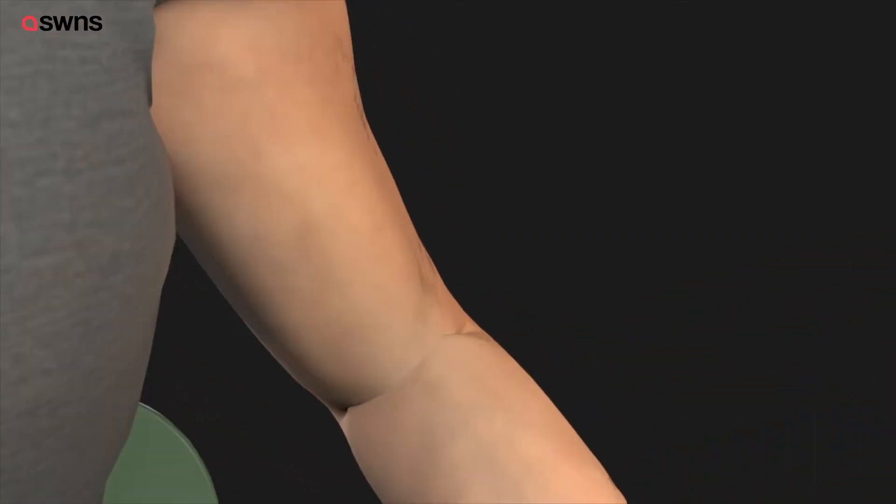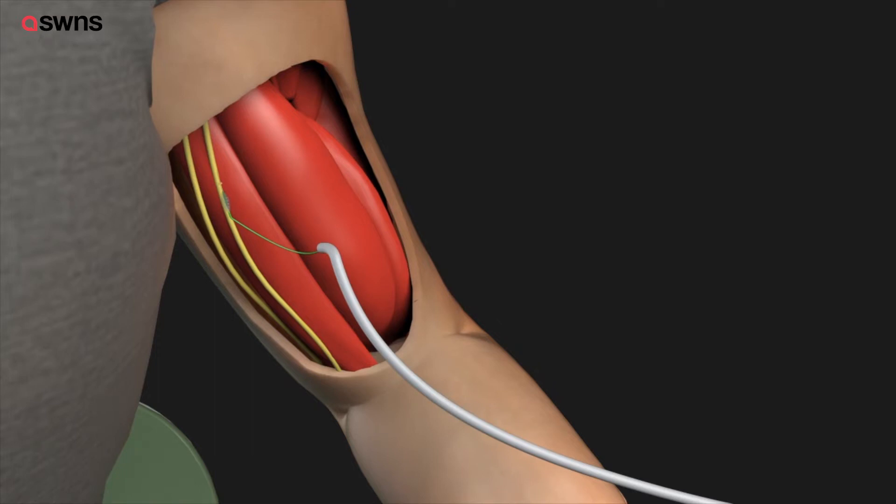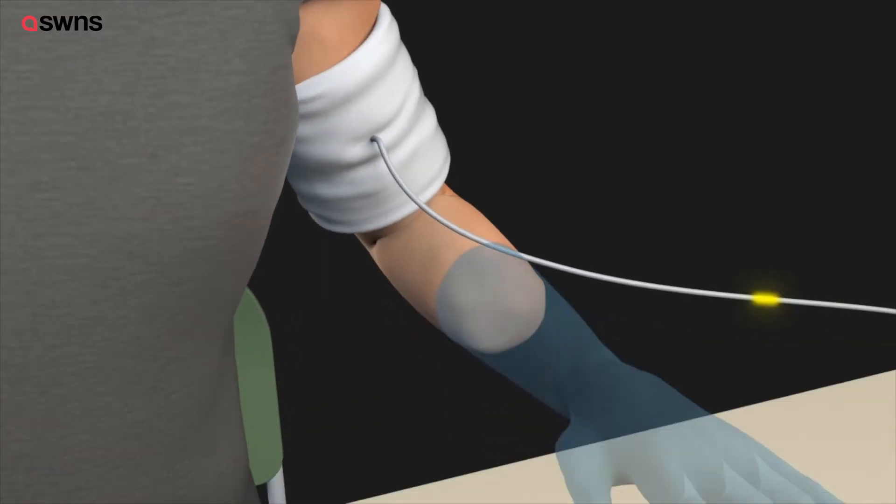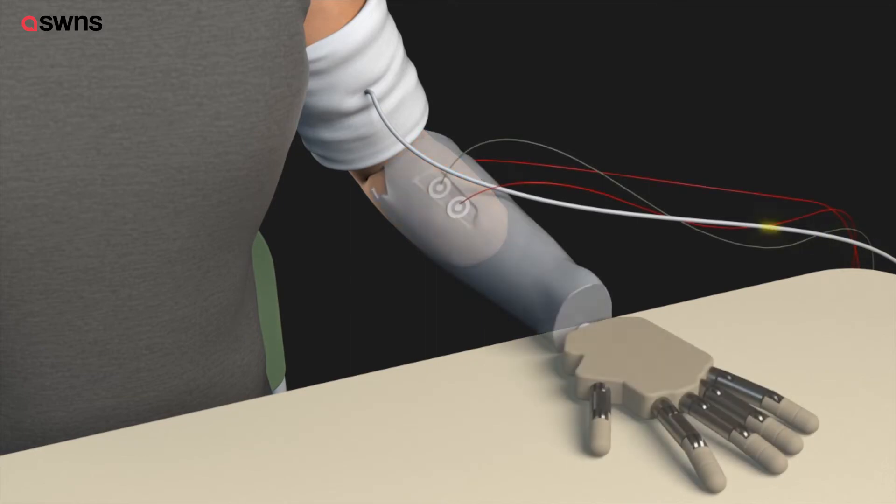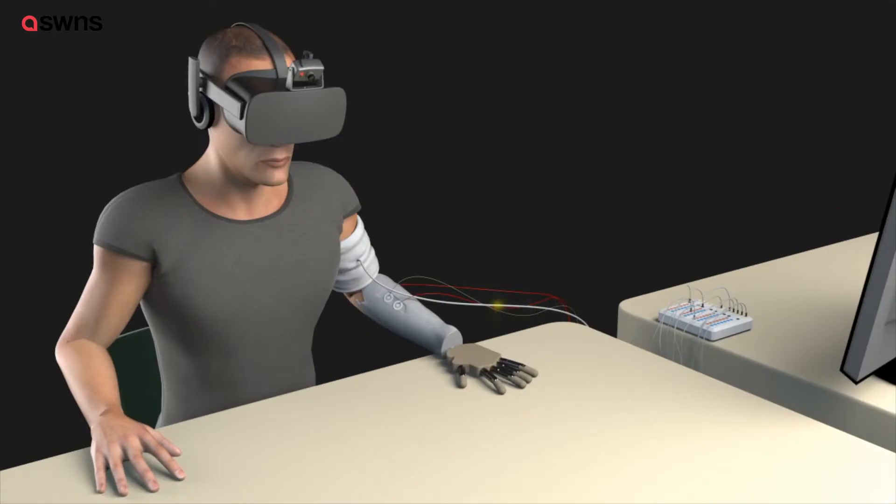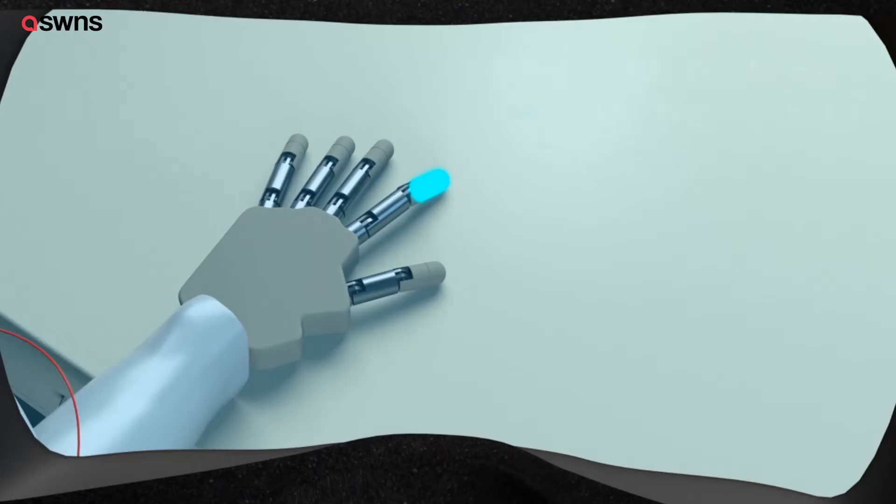Our approach was to trick the brain through two senses, vision and touch. We administer neurostimulation in the nerve of the stump to elicit tactile sensation on the index finger of the phantom limb. And at the same time, we illuminate the exact same location, so the index finger of the prosthetic device.